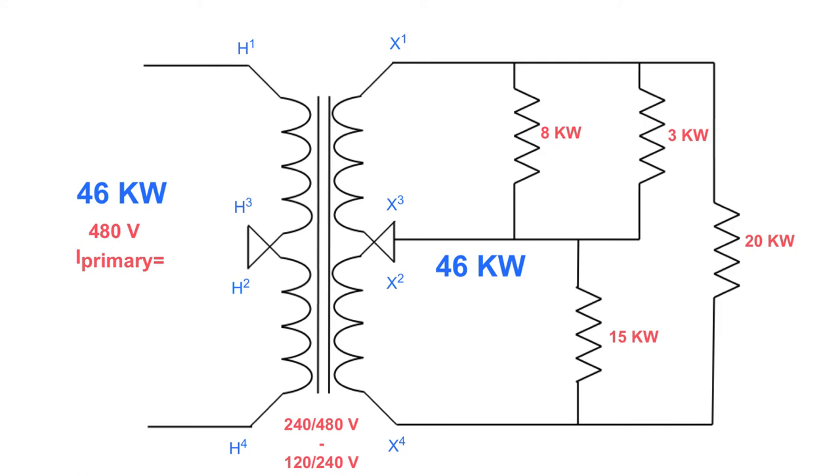And now to determine what our current is, all we have to do is take 46 kW divided by 480 volts, and we will get our primary current, which is 95.8 amps. That's it. That's all. That's done.